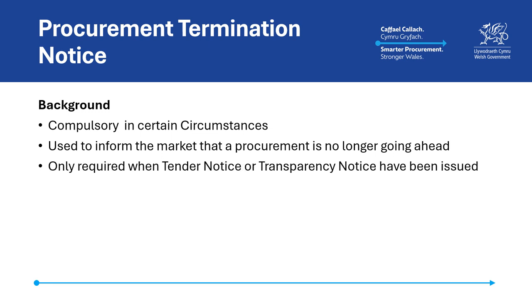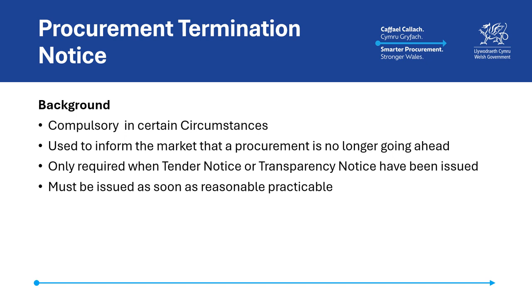Procurement termination notices must be published for all procurements where a tender notice or transparency notice has already been issued. These notices must be issued as soon as is reasonably practicable by the contracting authority after making the decision not to proceed with the procurement, to give notice to the market.